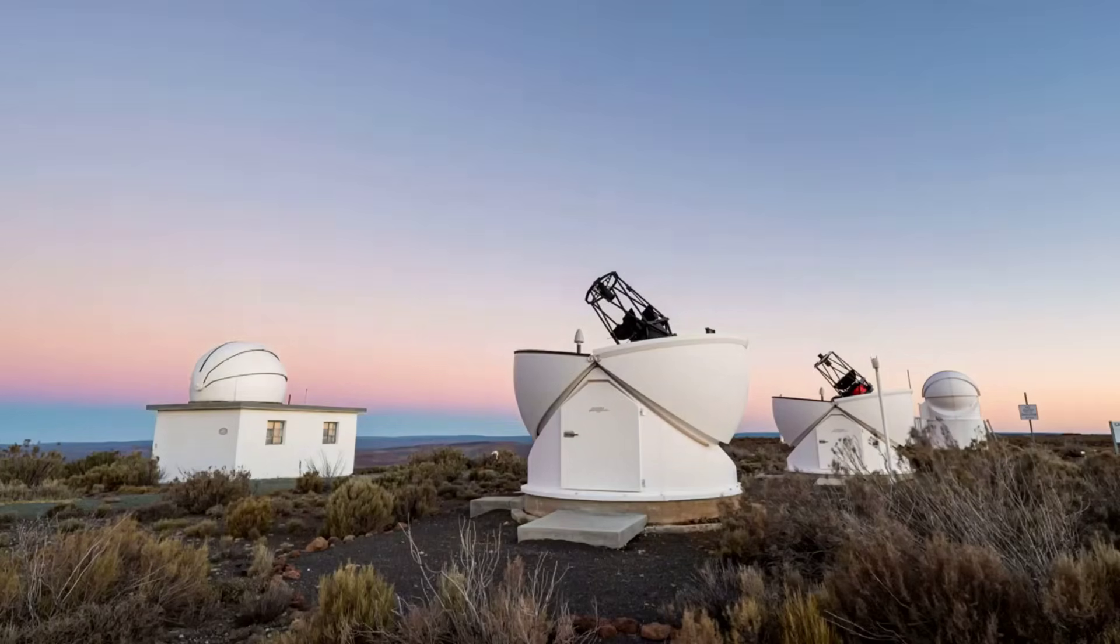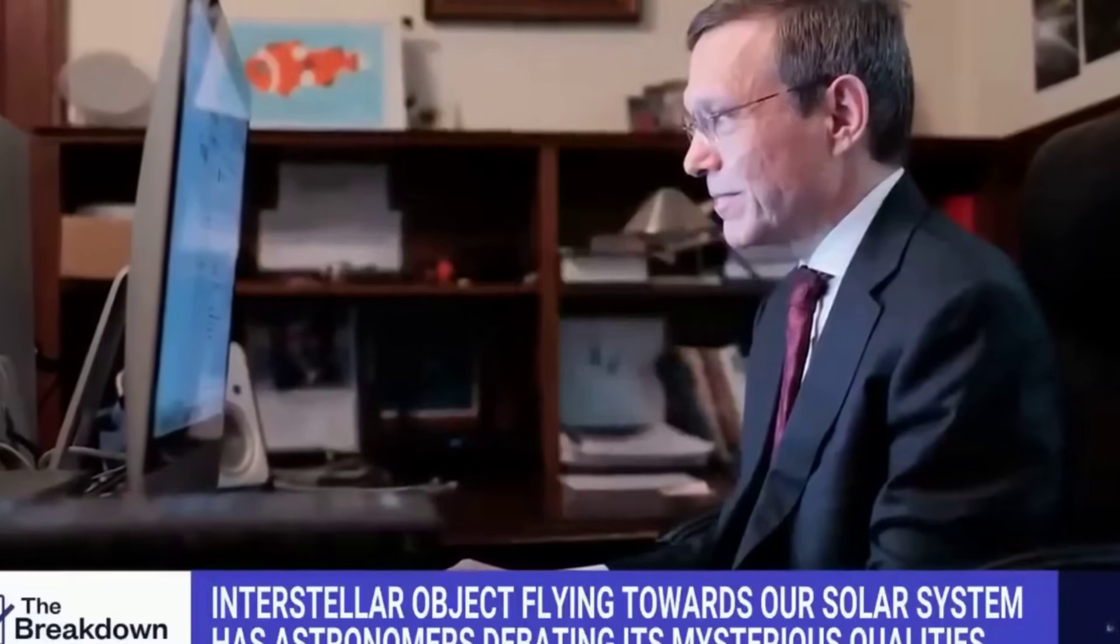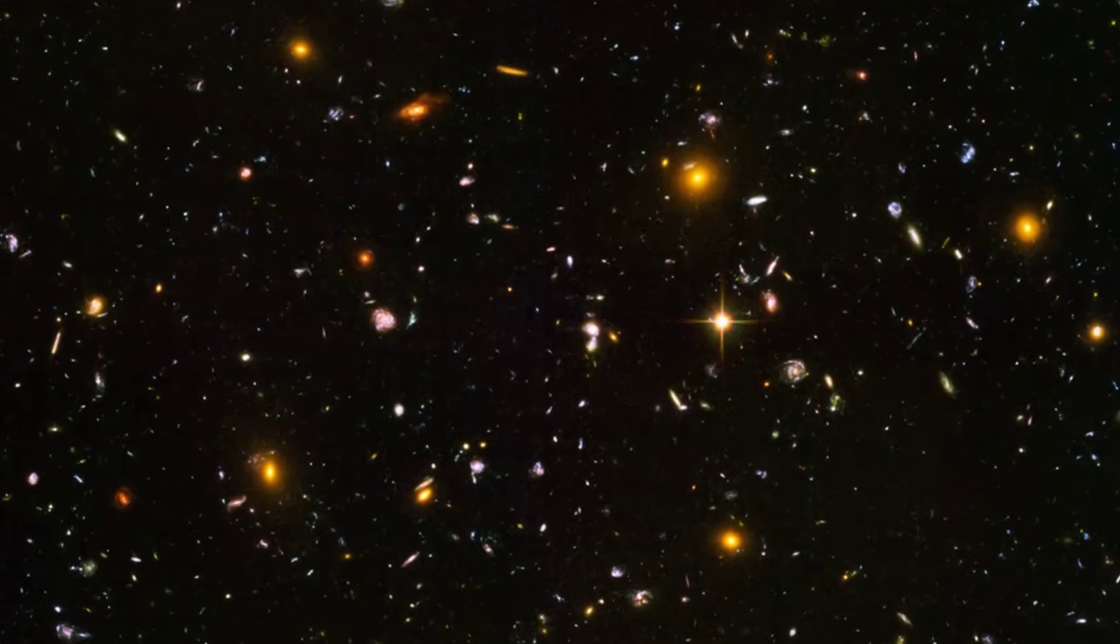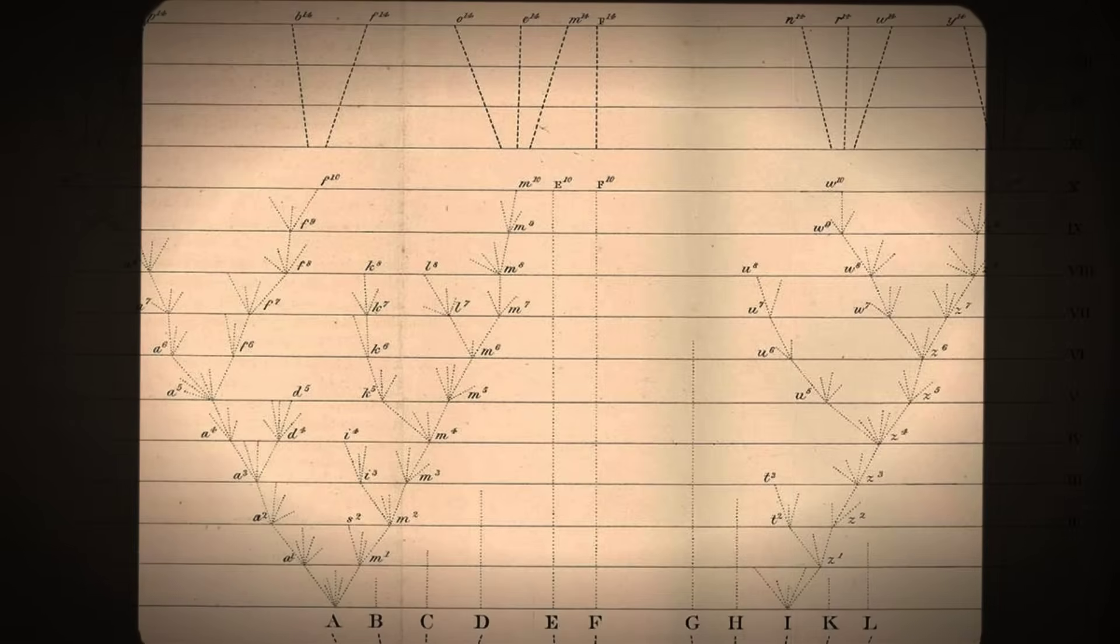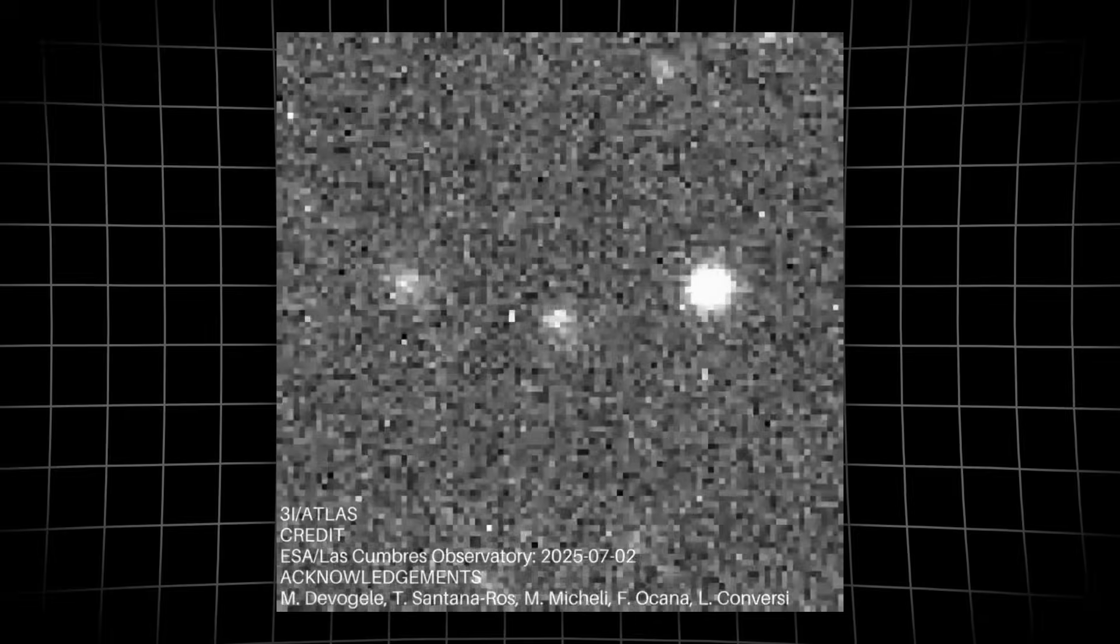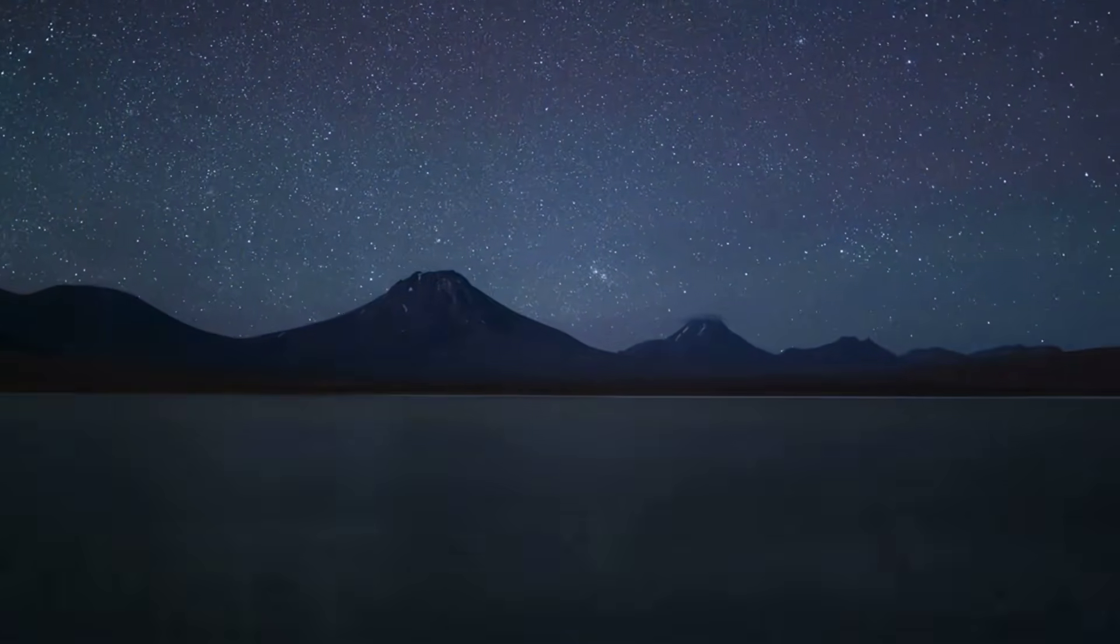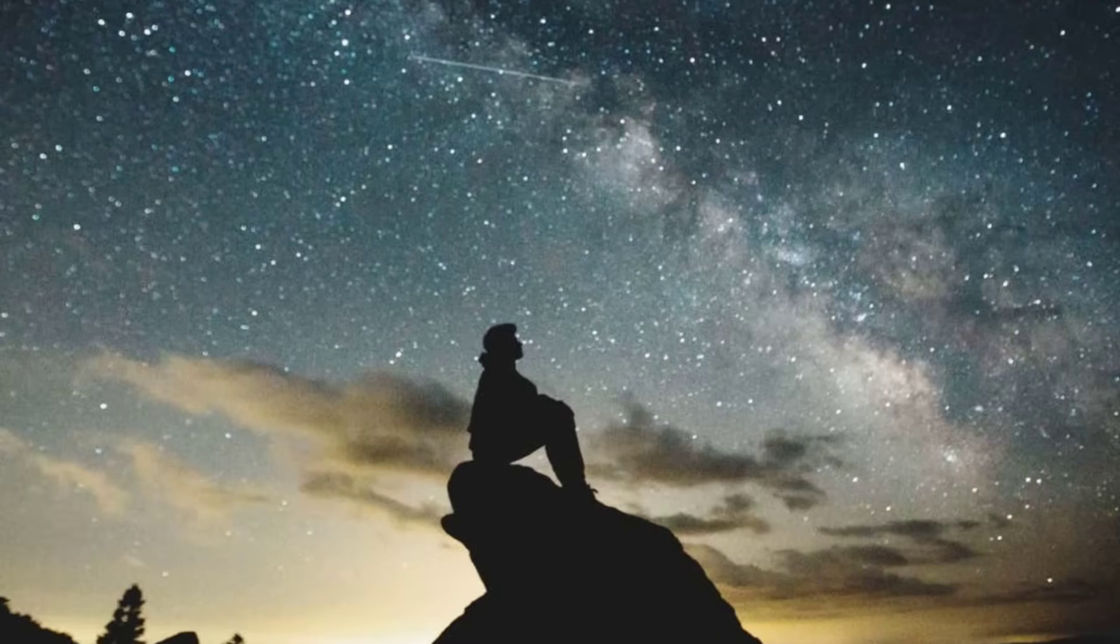Every new data point from 3I Atlas forces astronomers to rethink what interstellar objects can be. The cosmos keeps revealing phenomena that don't fit old categories. Today, the boundary between natural and unknown blurs, and the sky reminds us that our solar system is not a closed chapter. What do you think?